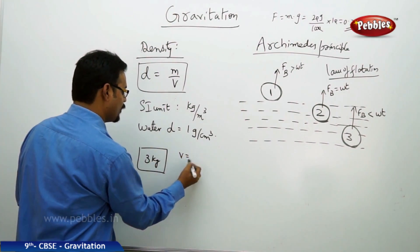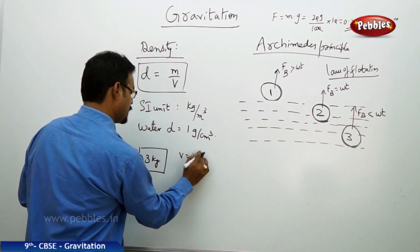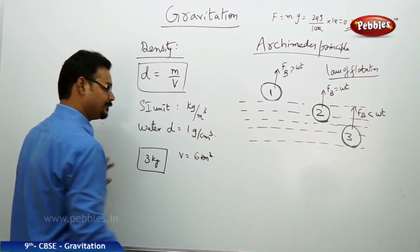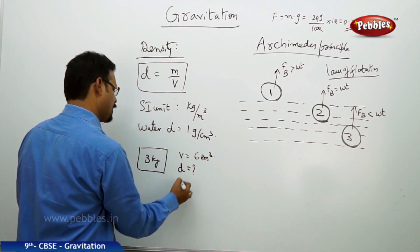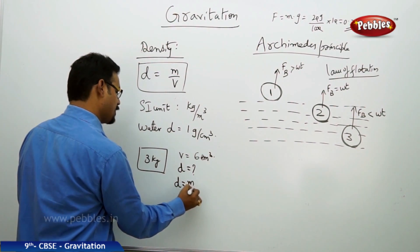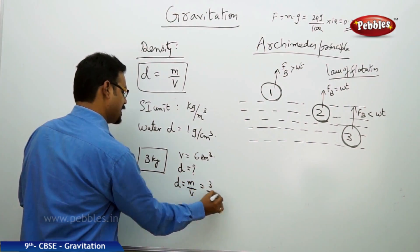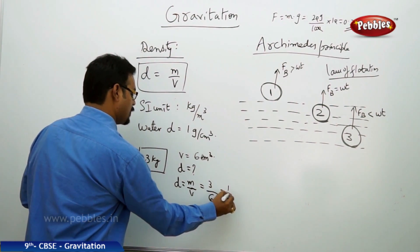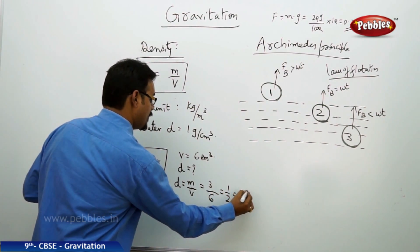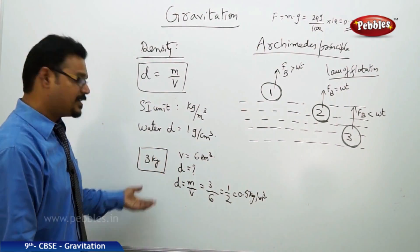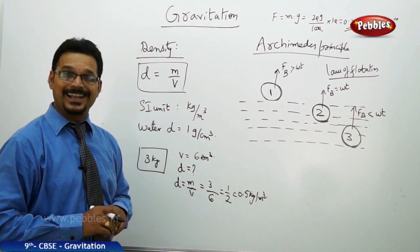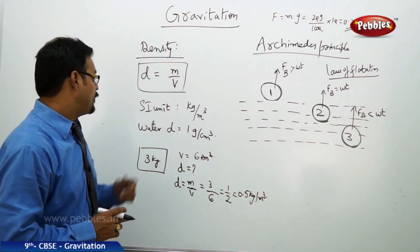Suppose if you take a body of mass 3 kg whose volume is 6 meter cube, and if I ask what is the density of this block, then see the formula: density = mass by volume. Mass is 3 kg, volume is 6, which is nothing but 1 by 2, 0.5 kg per meter cube. That's the density of the body. Like that, different solids have different densities.